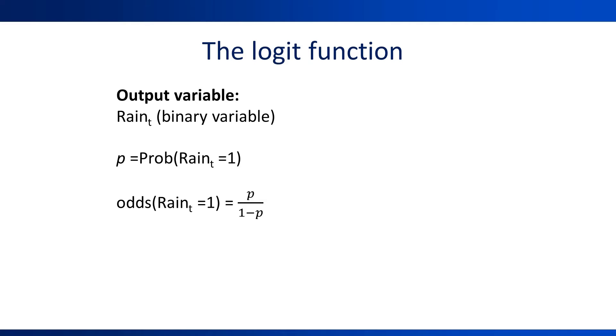Odds are commonly used in gambling and in races. Odds can take any non-negative value. The last step is to take a logarithm of the odds. The log of odds is called a logit, and this is a function that can take any value. This is the function used in logistic regression in the left-hand side of the equation.